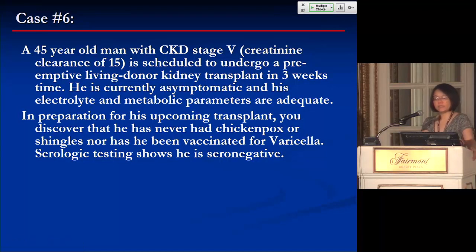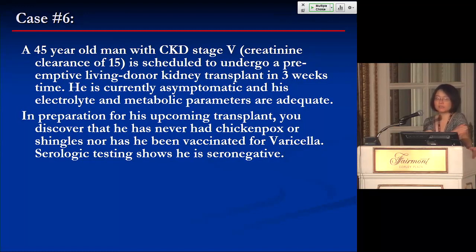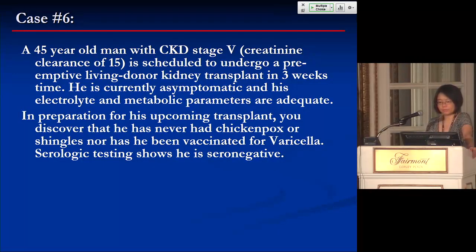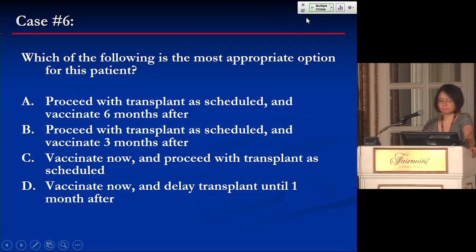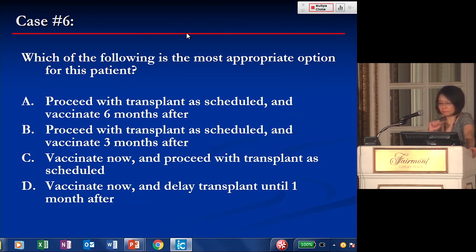Case six: a 45-year-old man with CKD stage 5 with GFR of 15 is scheduled for a preemptive living donor kidney transplant in three weeks. He is currently asymptomatic with adequate electrolytes and metabolic parameters. In preparation for his transplant, you discover he has never had chicken pox or shingles and has never been vaccinated for varicella. Serological testing shows he is seronegative. Which is the most appropriate option for this patient?